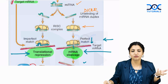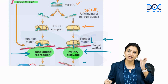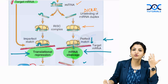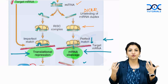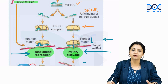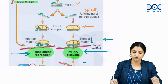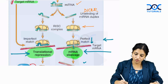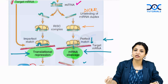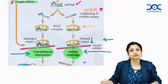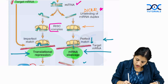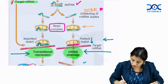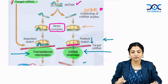Say a patient has sickle cell disease: the sickle cell DNA produces sickle cell RNA, and sickle cells enter the blood causing problems. You can cut the sickle cell RNA using microRNA. The double-stranded microRNA from the nucleus is processed by DICER into single-stranded form, which sits in its RISC complex and is brought to the target mRNA.